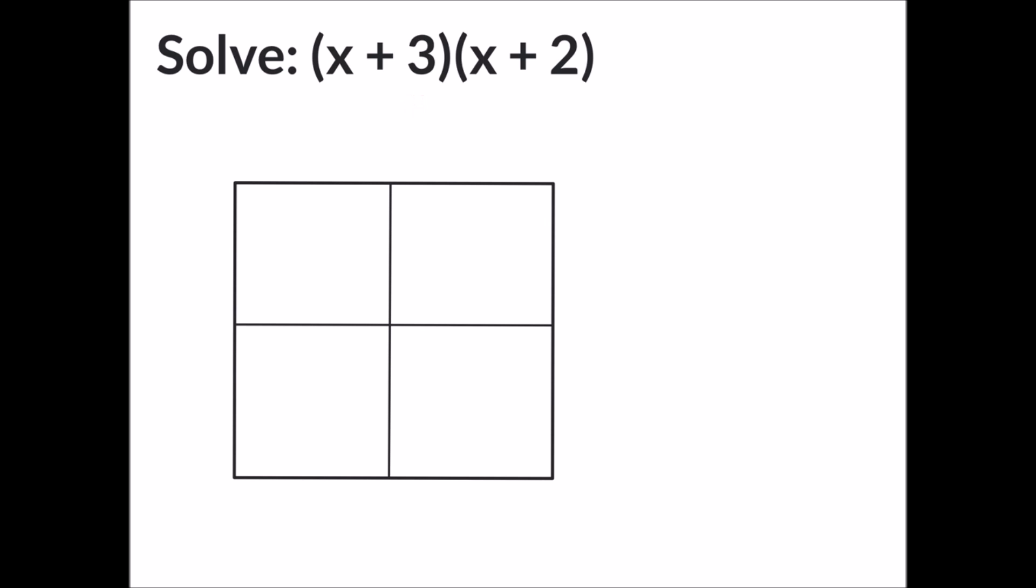Now we're going to represent x plus 3 by writing x on top of one quadrant and the positive 3 in the other. And now we're going to show x plus 2 along the side by writing x in one quadrant and positive 2 in the other quadrant.